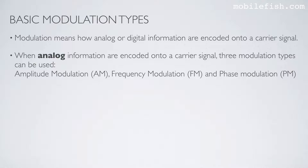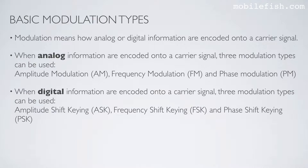When analog information are encoded onto a carrier signal, three modulation types can be used: amplitude modulation, frequency modulation, and phase modulation. When digital information are encoded onto a carrier signal, three modulation types can be used: amplitude shift keying, frequency shift keying, and phase shift keying.